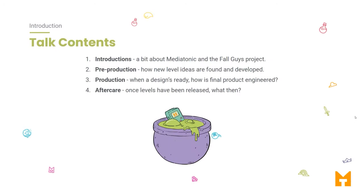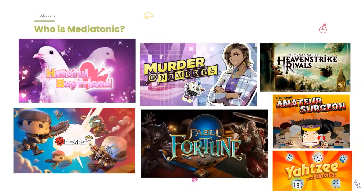So we've done our introductions, but we'll also talk a little more about MediaTonic and the Fall Guys project to get people up to speed. Then we'll talk about the different stages of what goes into making a level: pre-production, production, and the aftercare as well.